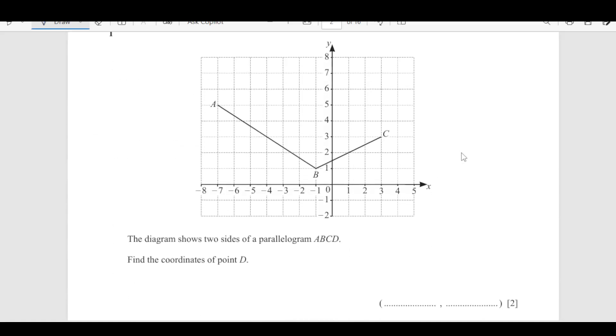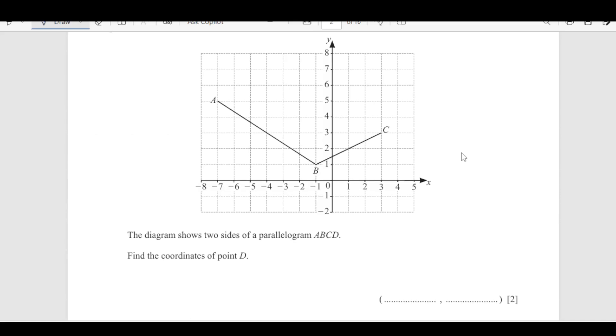The first question that we have here, you can see a diagram. The diagram shows two sides of a parallelogram ABCD. Find the coordinates of point D. So, we have three points here, A, B and C. We are looking for the fourth coordinate. If you see from B to C, there are 1, 2, 3, 4 units this way, and then moving 2 units up.